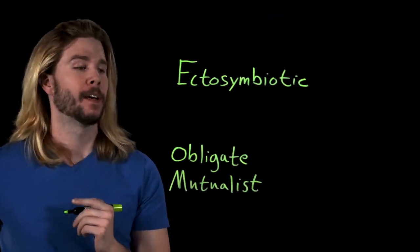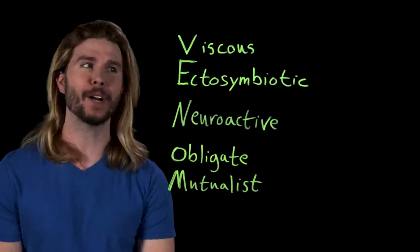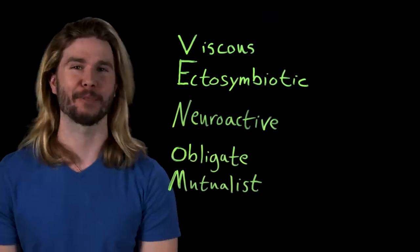Knowing all these permutations, we now have all the information we need to classify Venom. We know that in most incarnations it lives on the surface of its host and that it provides a substantial benefit to said host. It also takes nourishment from that host, conveys superpowers to it, and it cannot live without something bonded to it — making it an ectosymbiotic obligate mutualist. More specifically, because Venom is a gooey thing that affects your brain, it's a viscous ectosymbiotic neuroactive obligate mutualist — a Venom, if you will.